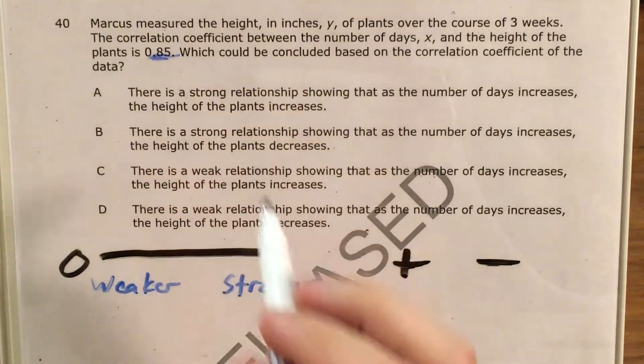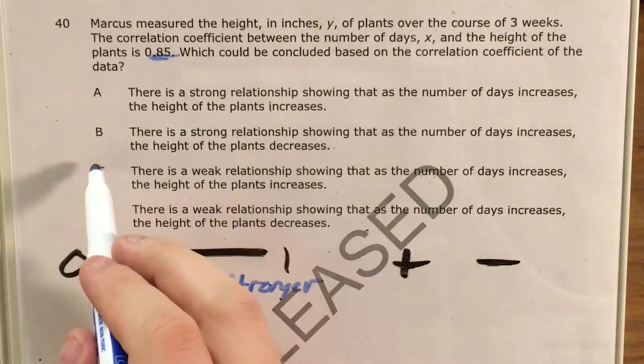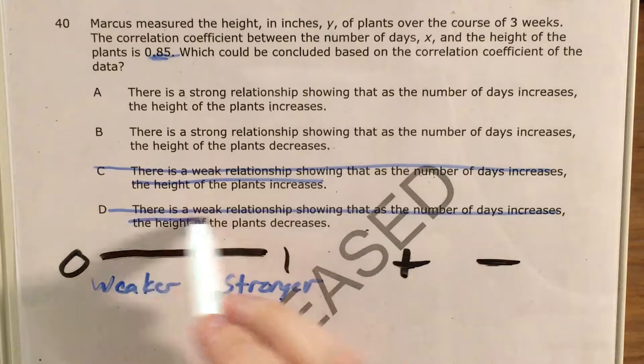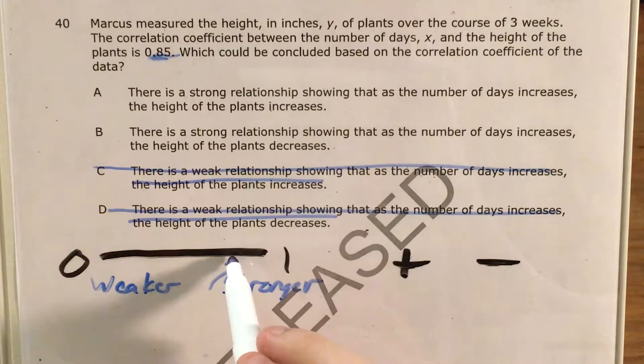0.85 is close enough to 1 that we can effectively eliminate the choices that say that there's a weak relationship because that would be right about here, much more on the stronger side than the weaker side.